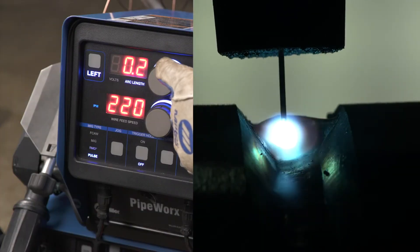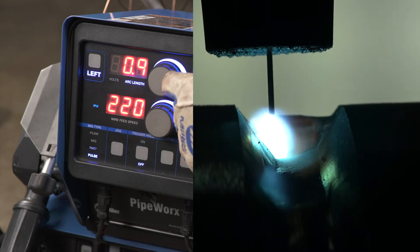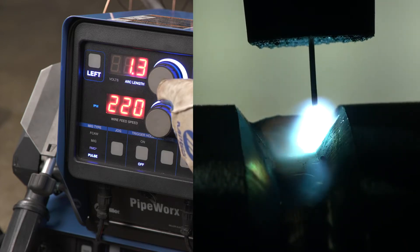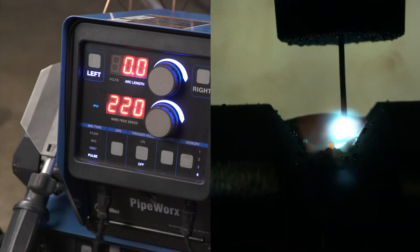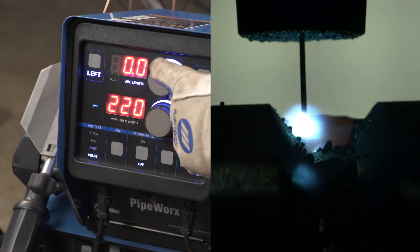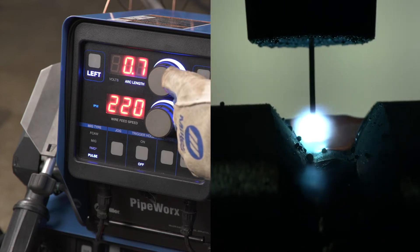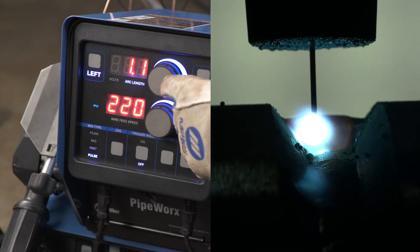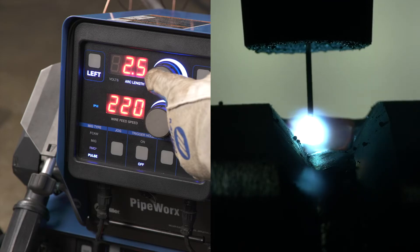Arc length in the pulse process is very noticeable and is used to draw the wire back or closer to the weld puddle. 0.0 is the recommended starting point. If there is a lot of crackle and spatter while pulse welding, increase the arc length a little at a time to draw the wire away from the puddle until it smooths out. Excessive arc length may result in poor puddle control.